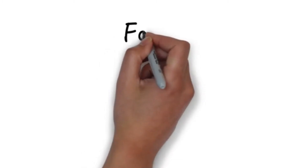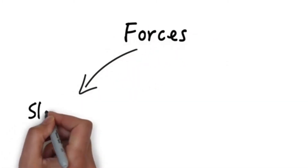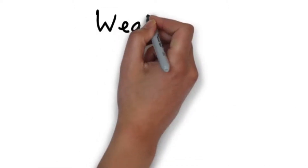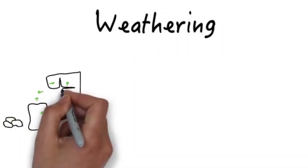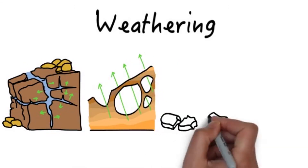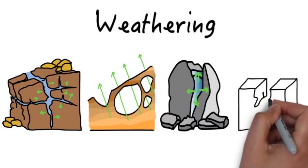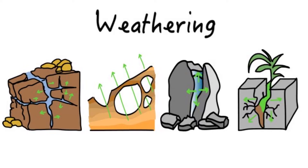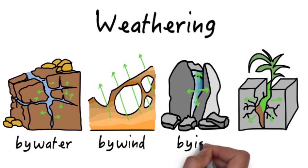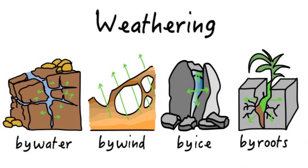Some forces give shape to the land leading to both slow and fast changes. Weathering causes slow changes to objects found on Earth's surface. Weathering takes place when rocks wear down and are broken into smaller pieces. Water, wind, ice, or plant roots can all cause weathering. It takes thousands of years for weathering to turn rocks into sand and soil.